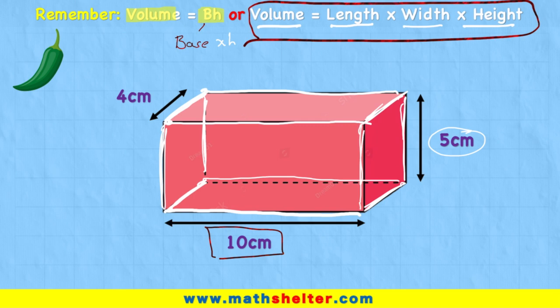So to get the volume, all I would need to do is length times width times height, or in other words, 10 times 4 times 5. 10 times 4 is 40. 40 times 5 is 200. But 200 what? Well, we know the unit we're working in is centimetres.